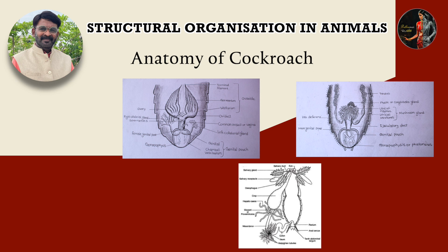Nervous system: it consists of a series of fused segmentally arranged ganglia joined by paired longitudinal connectives. Three ganglia lie in the thorax and six in the abdomen. The nervous system of the cockroach is spread throughout the body. The head holds part of the nervous system while the rest is situated along the ventral part of the body. In the head region, the brain is represented by the supraesophageal ganglion, which supplies nerves to the antenna and the compound eyes. Nerves arise from all the ganglia in the head, thorax, and abdomen and innervate various parts.